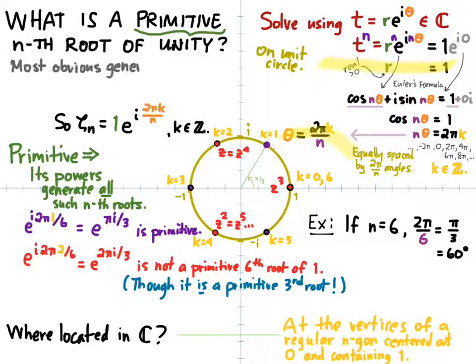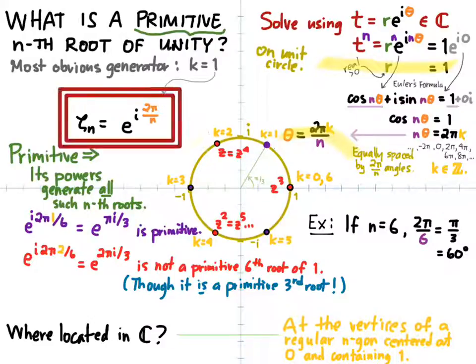So what's our most general statement, the most obvious way to get a primitive n-th root of unity? Well, the most obvious generator of the integers is the number 1. And therefore, taking k equals 1 in our formula will guarantee that we generate all the n-th roots of unity, and therefore have a primitive n-th root. And so what we usually mean when we say the primitive n-th root of unity is we mean the choice where k is equal to 1. So 1 times e to the 2 pi i over n. That's what we're going to call the primitive n-th root of unity, zeta n.